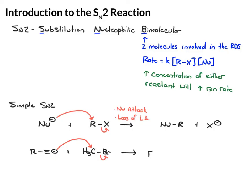And then our product, we alkylate that alkyne, plus Br minus. So without even knowing it, you've already learned an SN2 reaction.